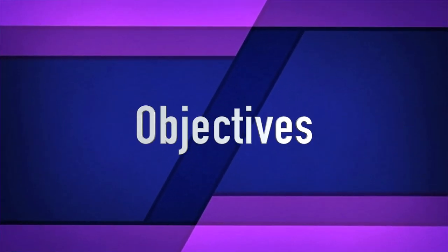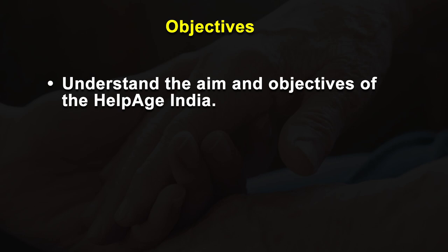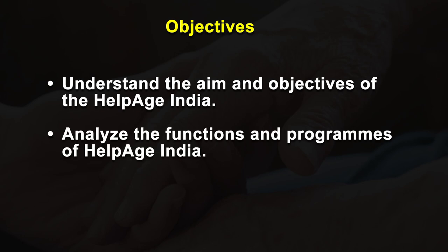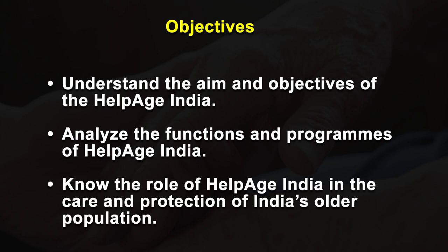This lesson is about HelpAge India's organization and its aims and objectives. It also explains the features and programs of HelpAge India, which is working for the destitute, poor and marginalized sections of India's older population. On the completion of this lesson, you should be able to understand the aims and objectives of HelpAge India, analyze the functions and programs of HelpAge India, and also know the role of HelpAge India in care and protection of India's older population.